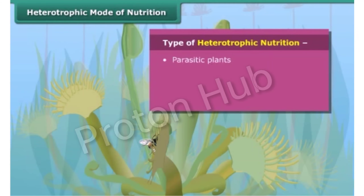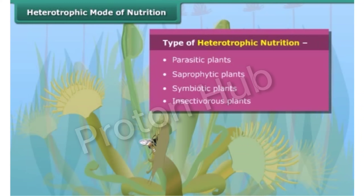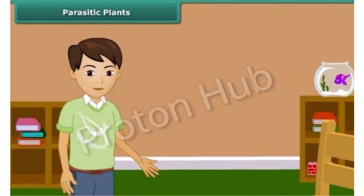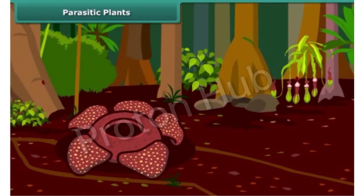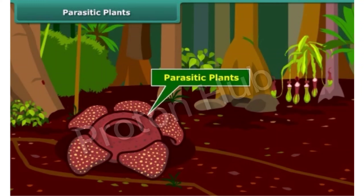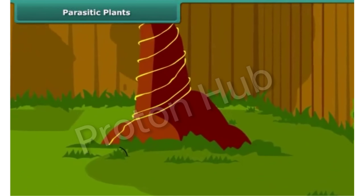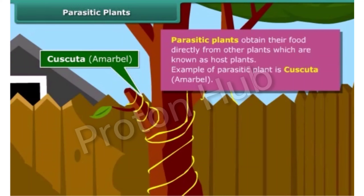The first type is parasitic plants. Plants which obtain their food directly from other plants are known as parasitic plants, and those plants from which they obtain food are known as the host. You might have seen Kaskata or Amarbeil nearby, which is an example of a parasitic plant.